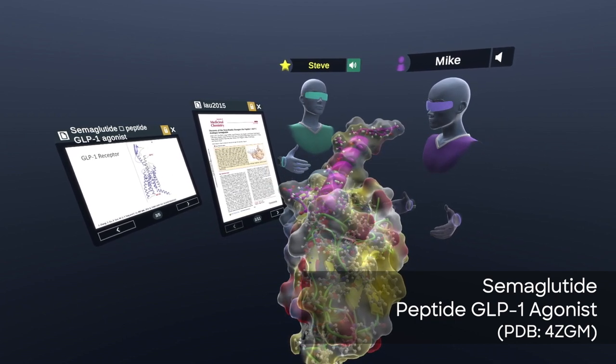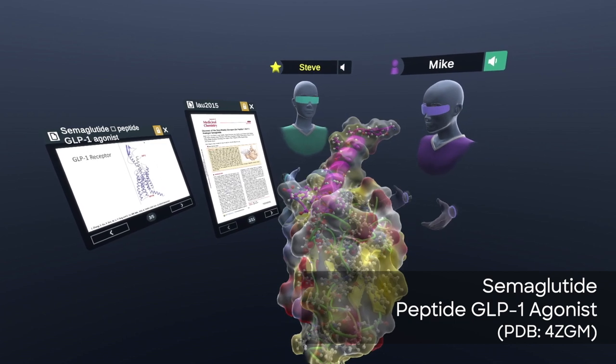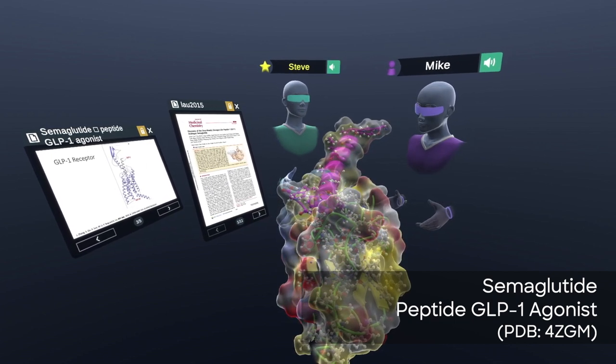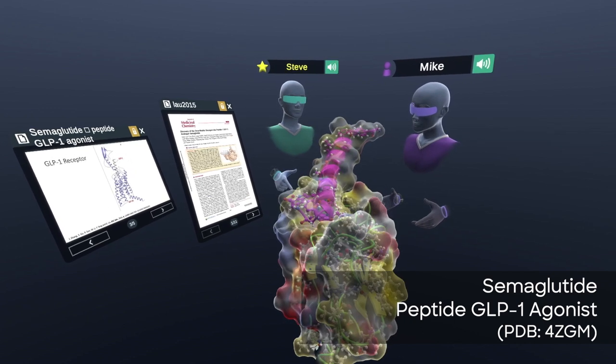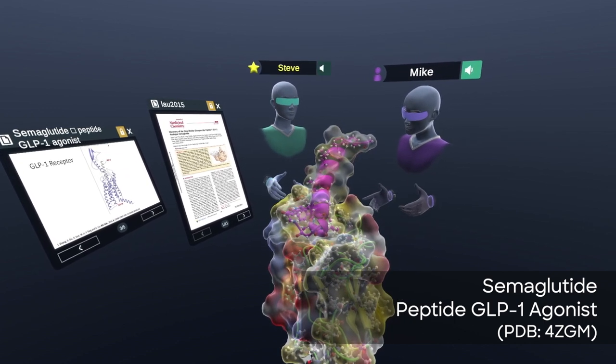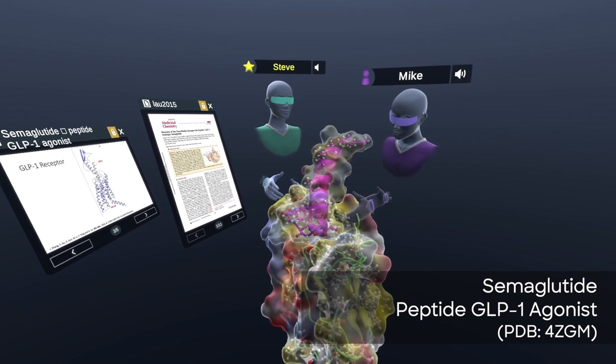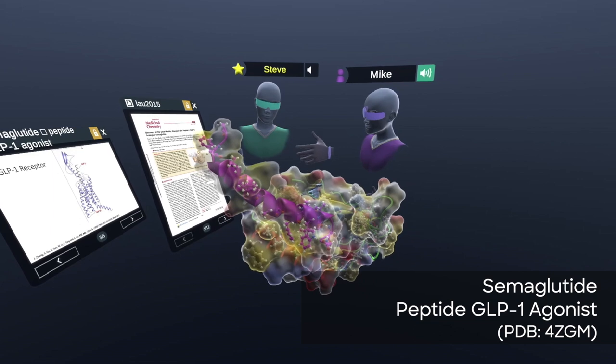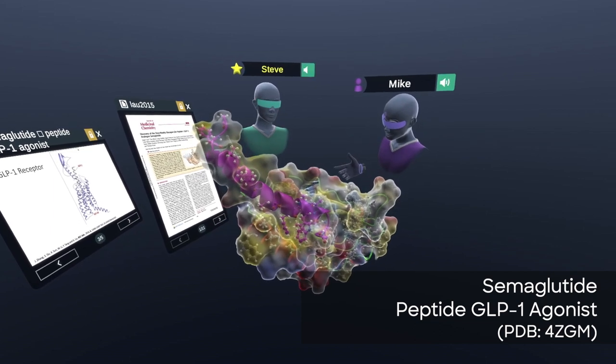Today, we're going to be looking at a paper that's a few years old now from Novo Nordisk that actually provides information on the crystal structure that they found between semaglutide. And what we see here in pink is the peptide part of semaglutide bound to its natural receptor in the body, the GLP-1 receptor.